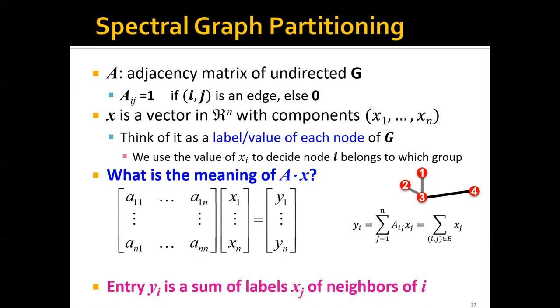So what is the meaning of A times x, where A is a matrix and x is a vector? Let's say that A times x equals y. Then each element of y, which is yi,